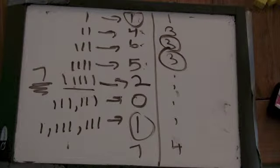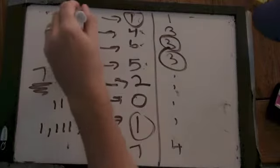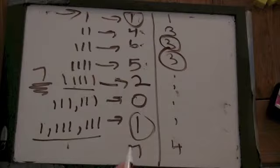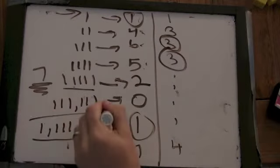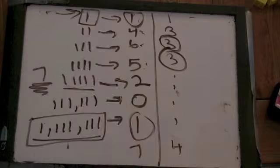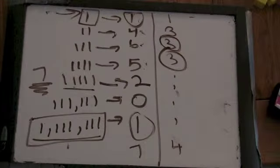From the fact that one has a remainder of one when divided by seven, and this has a remainder of one when divided by seven, how can I use that fact to find a number that only has ones and zeros in it?